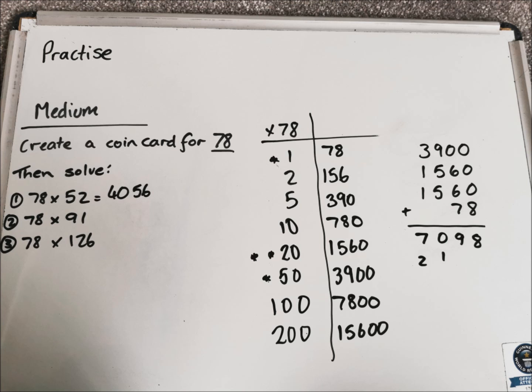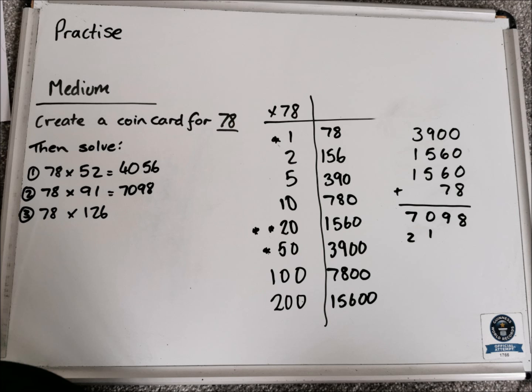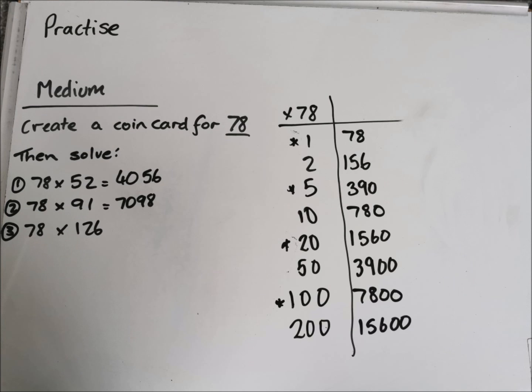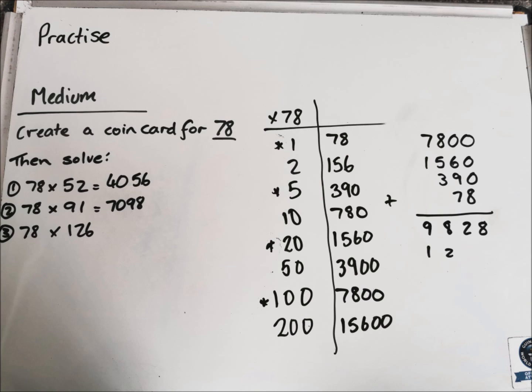The last one on medium was 78 times 126. I need to make 126, so I'm going to use 100, 20, 5, and 1. Adding them up at the side, I got 9,828 for that last problem.